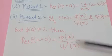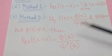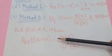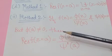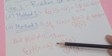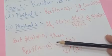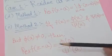Using this formula, the residue of the given function at the simple pole equals the numerator value at the pole divided by the derivative of the denominator evaluated at the pole. This fraction gives you the residue value at the simple pole. Use Method 2 when denominator is zero and numerator is non-zero at the pole.